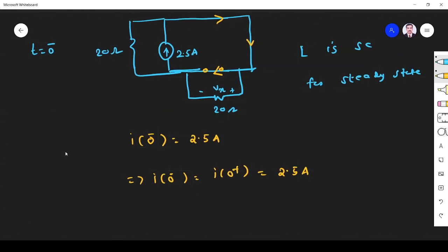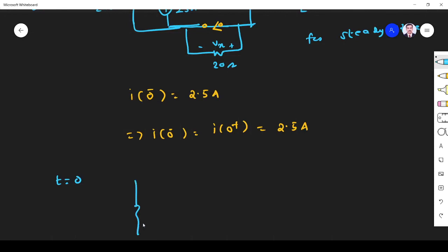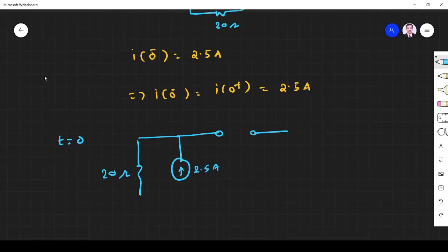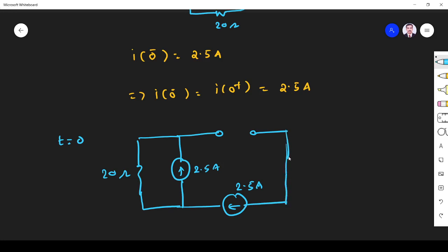At t equals 0 the switch is open. So at t equals 0 the switch is open. The circuit becomes like this: 2.5 amps, 20 ohm. The switch is open but we know current through inductor will not change immediately. So what happens? The same 2.5 amps flows through this inductor because this is t equals 0. At t equals 0 plus the same current flows.